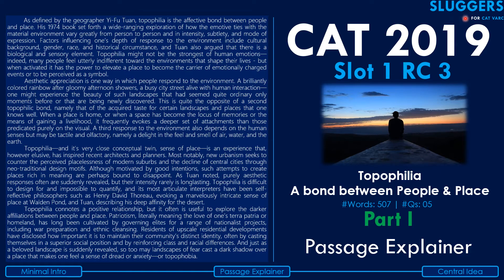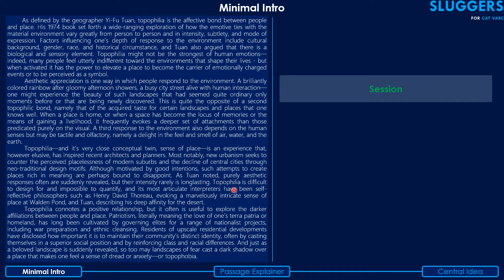Hi everyone, welcome to the channel Sliver's View for your CAT RC preparation. Today we'll be taking up the third RC that was asked in the first slot of CAT 2019. This RC also serves as the first RC for the Culture and Social Sciences genre, which is the second genre we have picked up as part of this course.